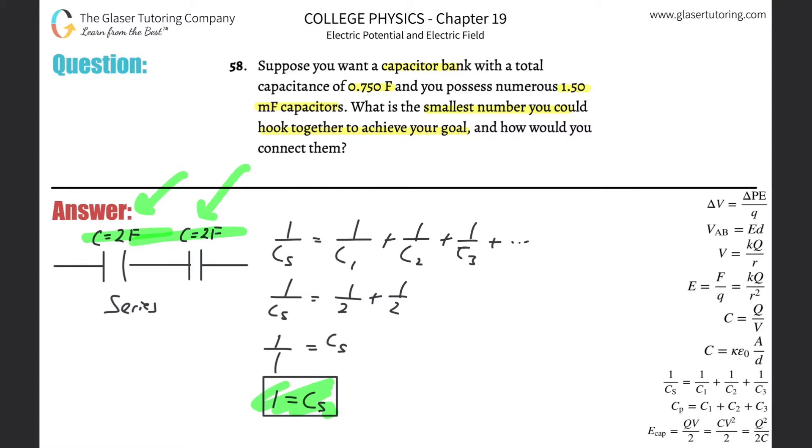I don't even really need to do the other example, but it's definitely not this way. If you have small capacitors - 1.5 millifarad capacitors - and somehow you got to connect them to get a larger overall capacitance of 0.75 farads, it ain't happening in series.